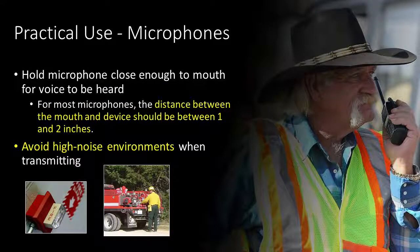Effective emergency communications doesn't just come from understanding the technologies at our disposal — we must also focus on learning how to use our equipment the correct way. Microphones, especially those attached to portable radios, often give responders the most trouble. The microphone must be held one to two inches away from the mouth for the voice to be heard clearly. Getting the microphone too close muffles the audio. When in a high-noise environment such as near a running pump engine, the need to raise your voice causes over-modulation, creating a similar inability to understand the message.